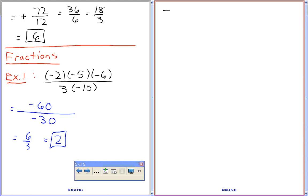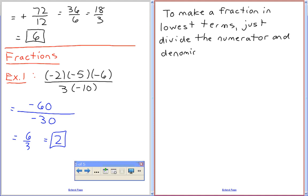To make a fraction in lowest terms, just divide the numerator and denominator by factors. I usually try the prime numbers if you are stuck, or if you can't easily find them.